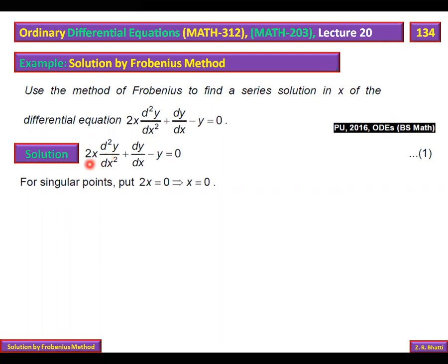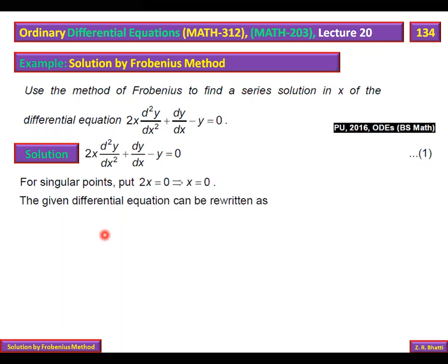The coefficient of the highest-order derivative is 2x. Setting 2x = 0 gives x = 0, which is the singular point. To classify this singular point as regular or irregular, we convert the original differential equation into standard form.